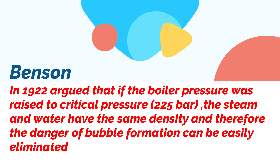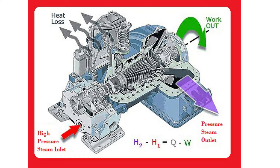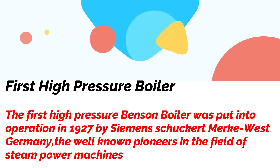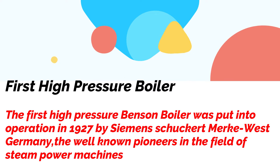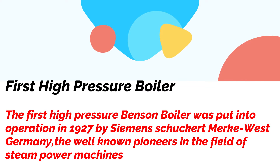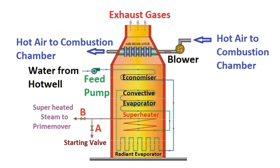The technical development at that time did not allow building turbines for such high pressure. The first high pressure boiler was put into operation in 1927 by Siemens in West Germany, the well-known pioneer in the field of steam power machines. The arrangement of the boiler components is shown in the figure.